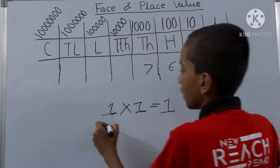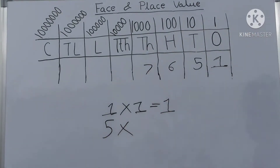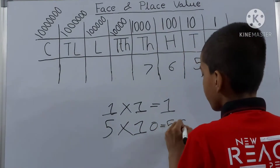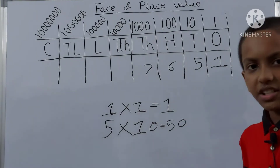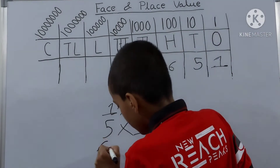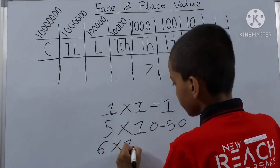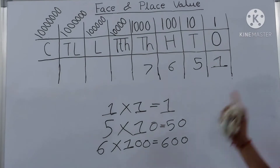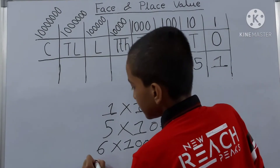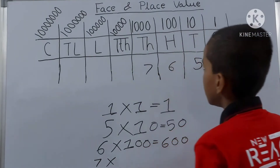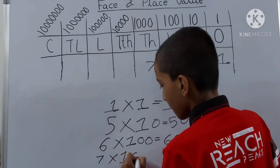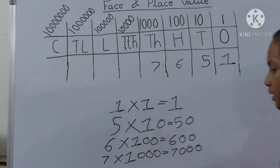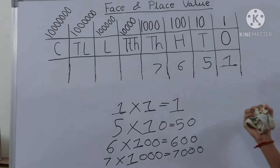Then 6 is on the hundreds place, so 6 into 100 — that is 600. So 6's place value in this number is 600. Then the last digit is 7, and it is on the thousands place, so we multiply it with 1000 — that is 7,000. So 7's place value in this number is 7,000. We now have the place value of each and every digit.